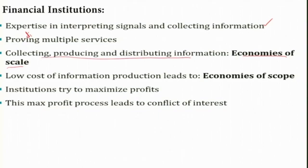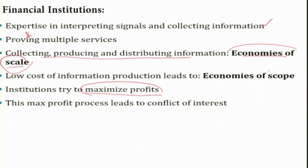The low cost of information production often leads to economies of scope as well. Financial institutions, just like any other firms, try to maximize profit. While trying to maximize profit, they often rely on economies of scale and also make use of economies of scope in order to maximize their profit.